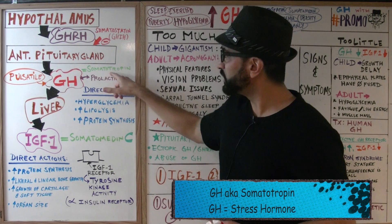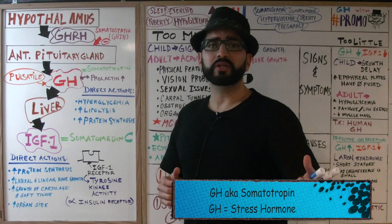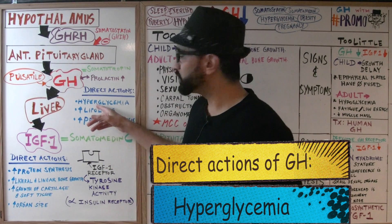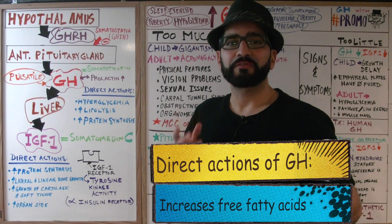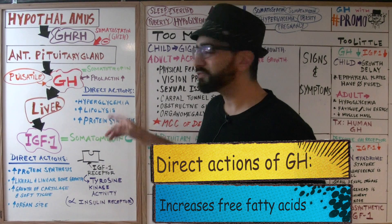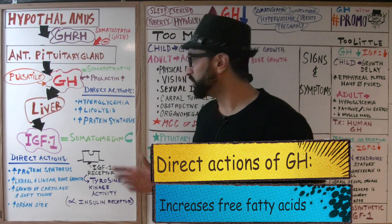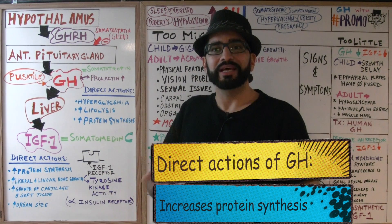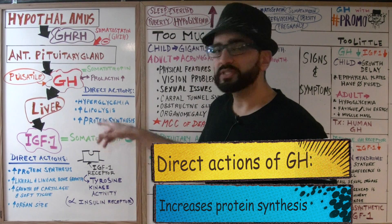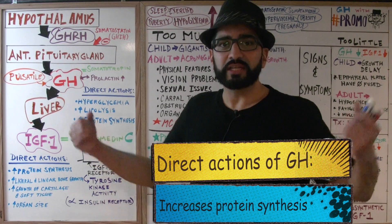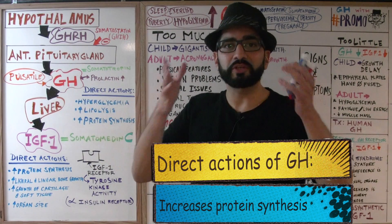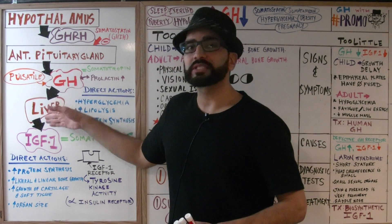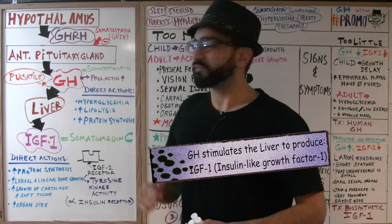Growth hormone is also referred to as somatotrophin. It is considered a stress hormone — it increases glucose in the blood (hyperglycemia) and increases free fatty acid concentration through lipolysis. Growth hormone is the most important hormone for growth: it increases uptake of amino acids, leading to increased protein synthesis and increased muscle mass. It also works directly on the liver.